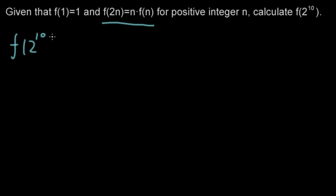f(2^10) is equal to f(2 times 2^9). Now this is 2n format, with n being 2^9 here.